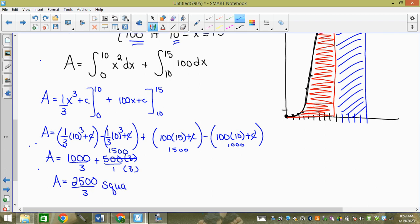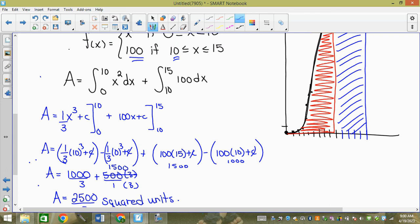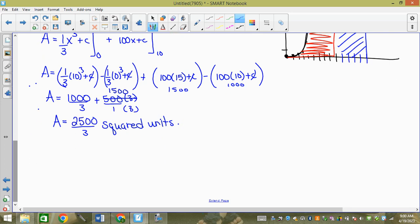And then when you add these, what do you get as a fraction? 2500 over 3. Yeah, that would make sense. Square units. They call it squared units in your book. So behind every area, you should have squared units. So do you see how we're finding the area under that curve in pieces is all?